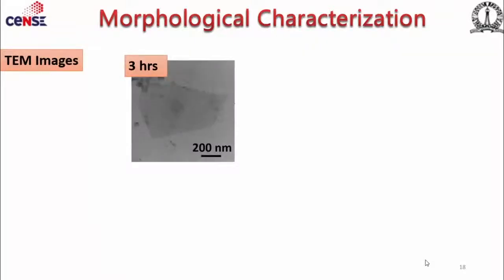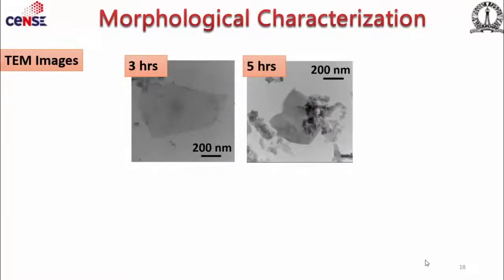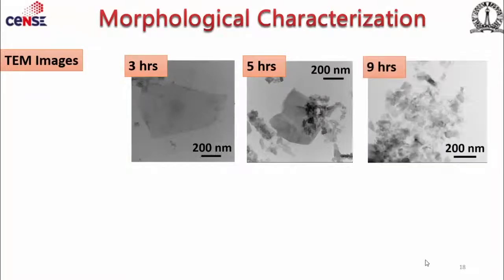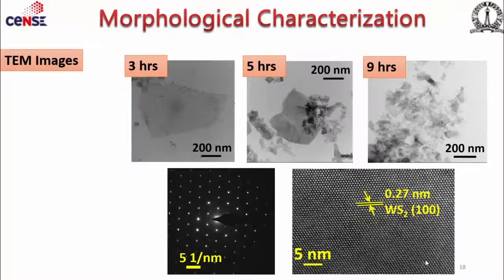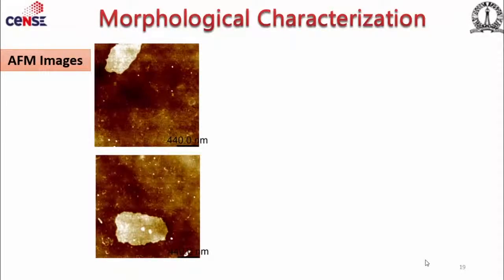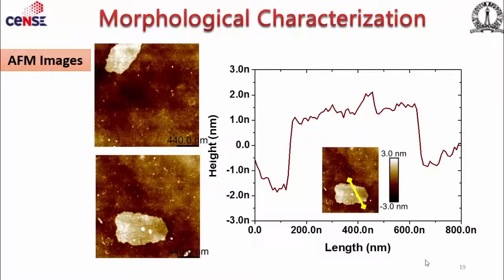In the TEM image, we can see even monolayers for the exfoliated samples — some monolayers as well as a few layers stacked on top of each other. Even in the five hour samples we have monolayers. For the nine hour sample, we see agglomeration everywhere but no sheets lying around. Crystallinity confirmed by SAED pattern shows highly crystalline material with hexagonal symmetry, and the lattice spacing confirms WS2 sheets. AFM measurements show bilayer to trilayer thickness — it's not a controllable process, yielding monolayer to few layers.